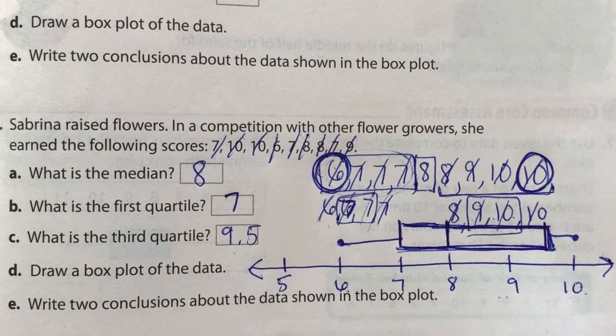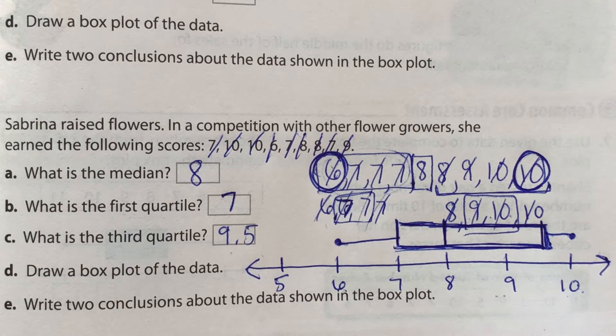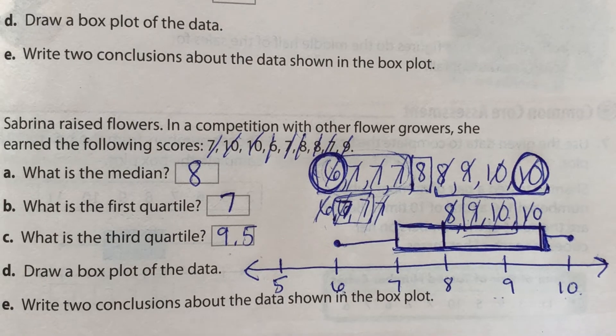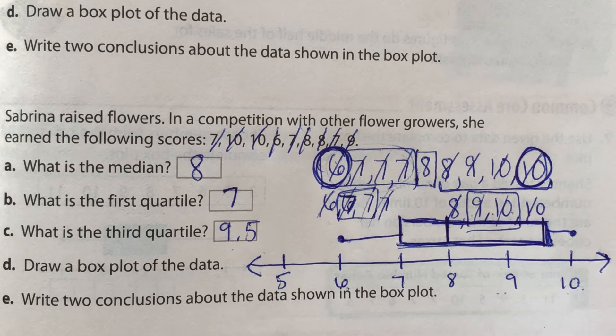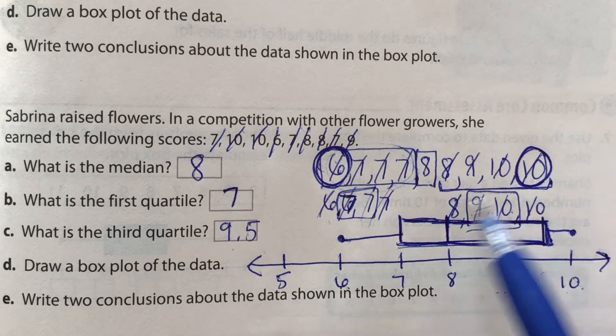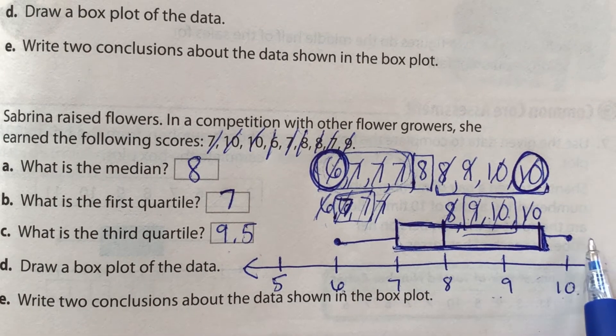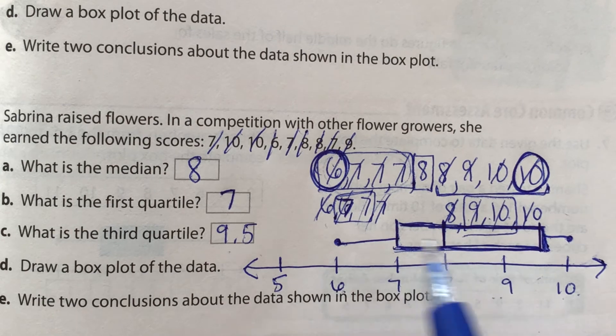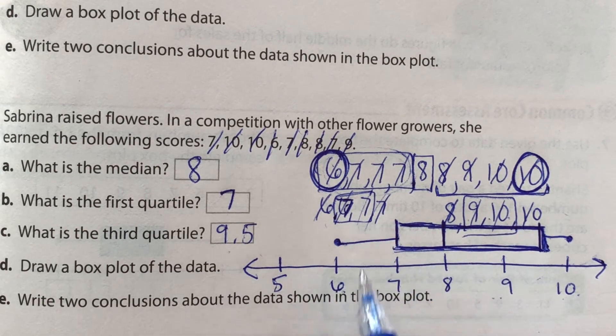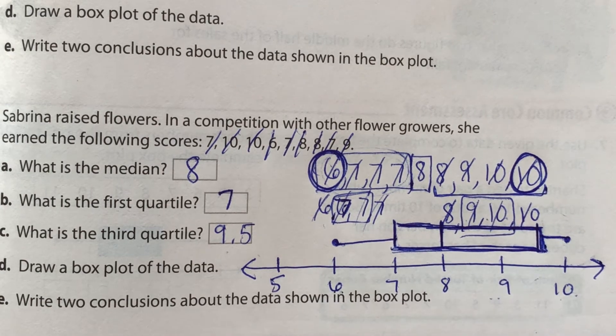So what we want to do, the last part, it says, write two conclusions about the data shown in the box plot. So what can you tell from this box plot? Well, you can see that since this box is more towards the higher numbers, you can tell that Sabrina got more higher number scores than lower number scores. Because this maximum is closer to the box. This line is shorter. So you can definitely tell that.